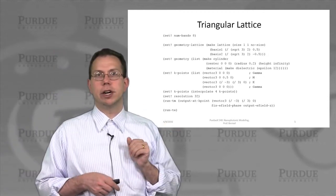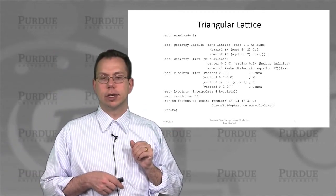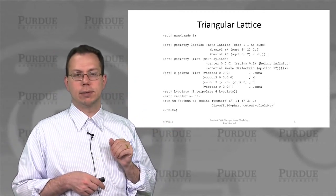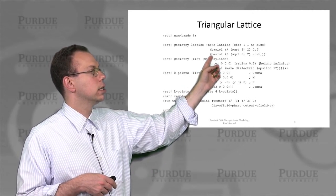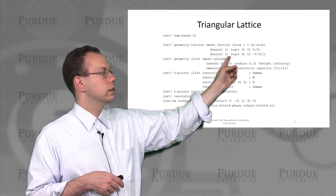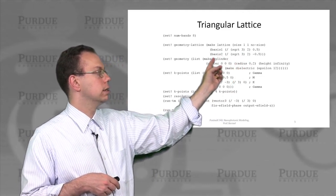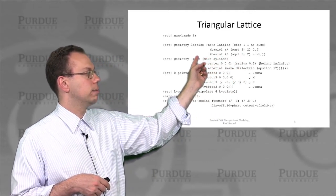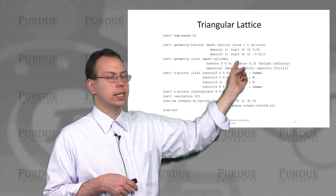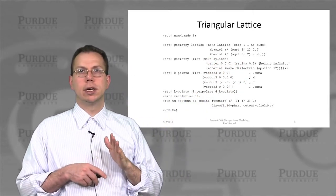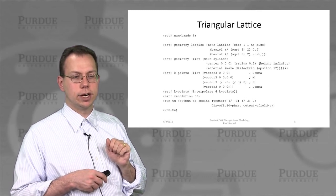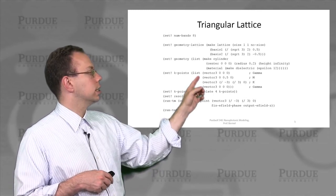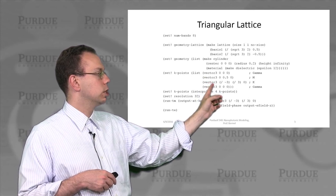Now similarly, we could also do a triangular lattice. In the triangular lattice, it's very similar conceptually, except now we have to define a basis that's non-Cartesian. Here we're defining the basis within the geometry lattice parameter to have two directions that are essentially separated by plus or minus 60 degrees. You can see that a lot of the other commands are very similar,